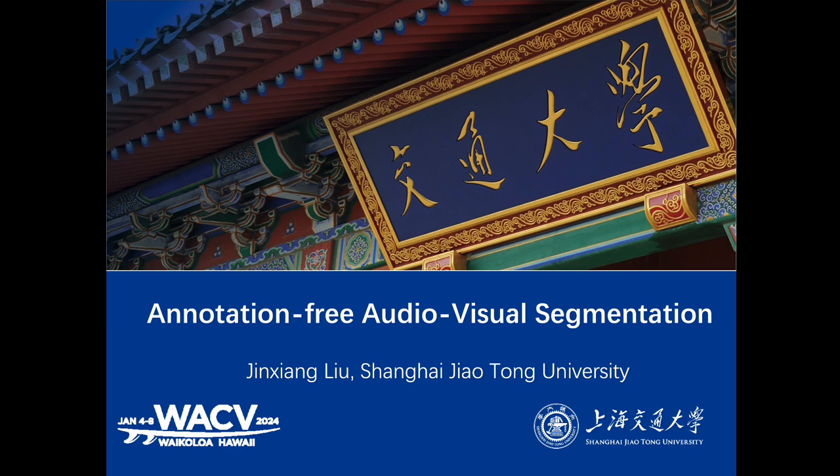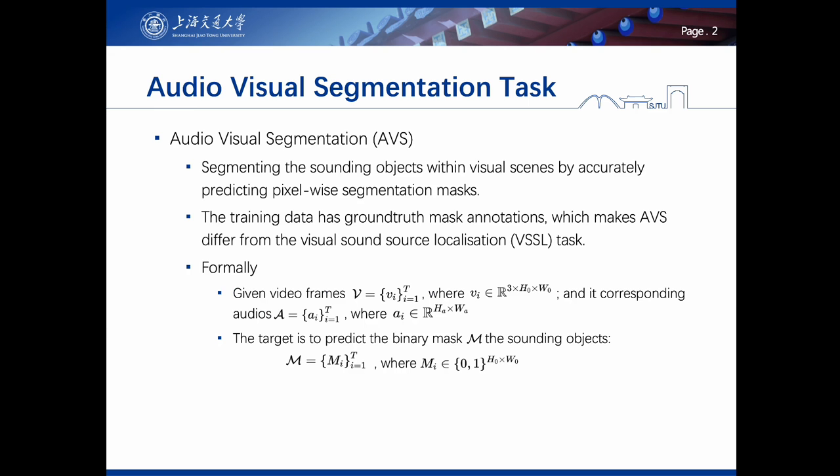The Audio-Visual Segmentation (AVS) task aims to segment the sounding objects within visual scenes by accurately predicting pixel-wise segmentation masks. The AVS task is different from the visual sound source localization task, as AVS has ground truth mask annotations in the training phase.